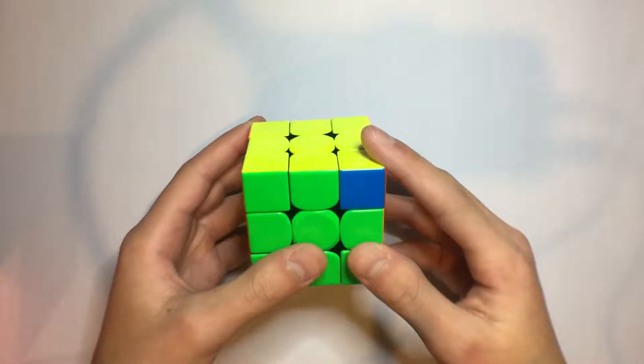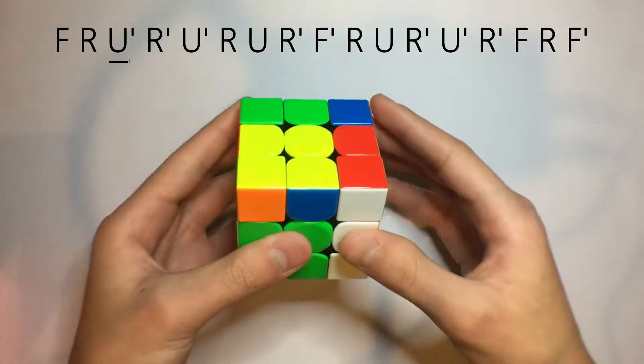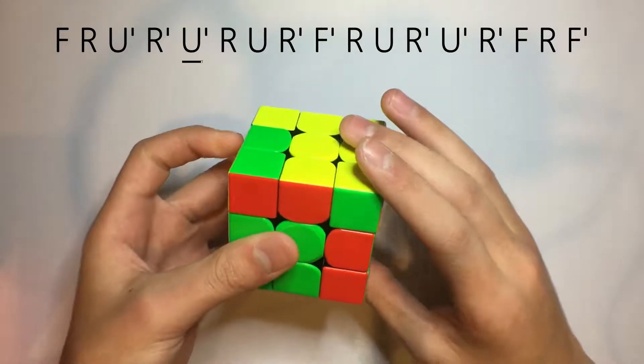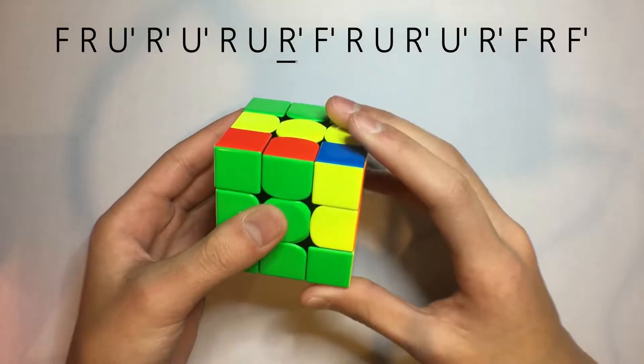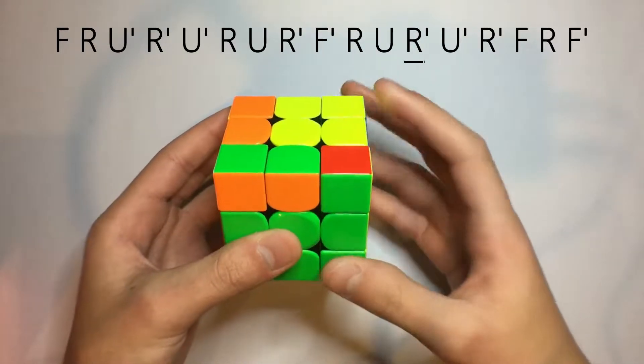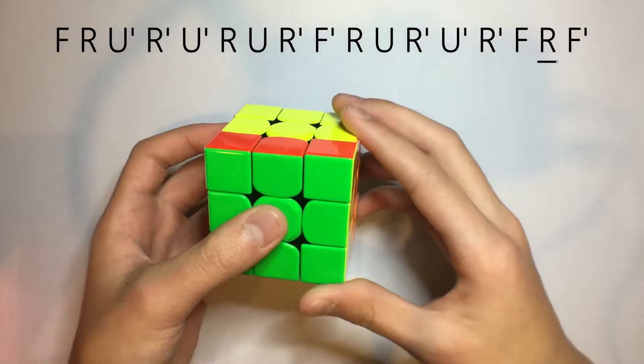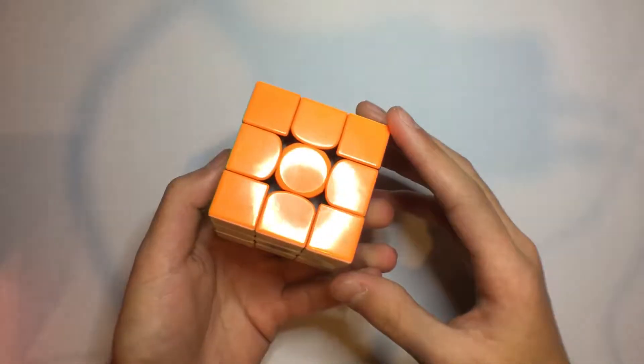The algorithm goes like this: f r u prime r prime u prime r u r prime f prime r u r prime u prime r prime f r f prime. And that solves the puzzle.